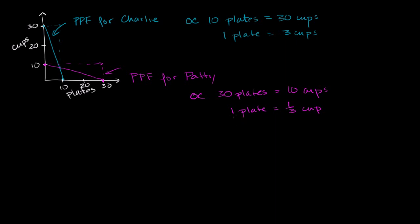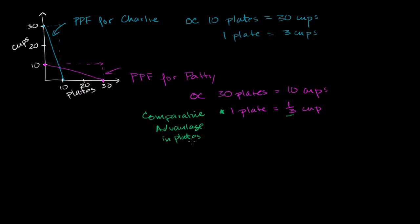Now we can compare their relative opportunity costs. The opportunity cost for Charlie to produce a plate is three cups; the opportunity cost for Patty is one third of a cup. So for Patty, it is cheaper to produce a plate — she has a lower opportunity cost than Charlie in producing plates. Because her opportunity cost is lower — one third relative to three — we say that Patty has the comparative advantage in plates. This is not about absolute advantage; she has comparative advantage because her opportunity cost is lower.